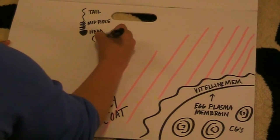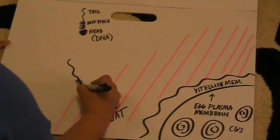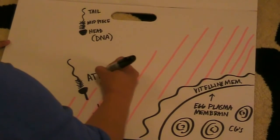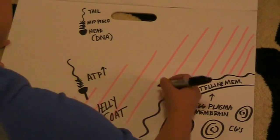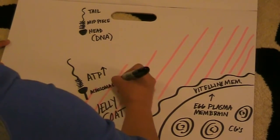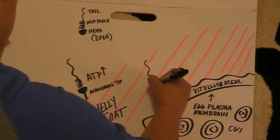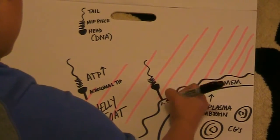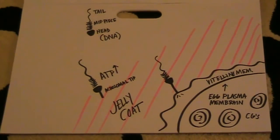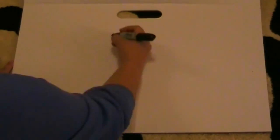So here's our regular sperm cell. It's got a tail, it's got a mid-piece where it has its mitochondria, and it's got a head that has the DNA. And as you can see, as it comes in contact with the jelly coat, some things happen. It produces more ATP for energy, and it starts to form that acrosomal tip that you saw fusing with the outermost membrane.